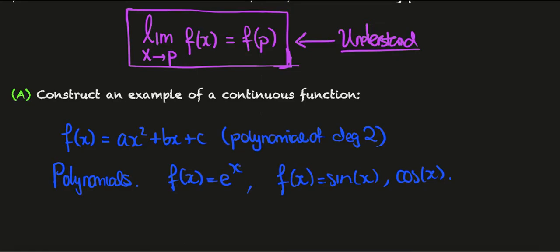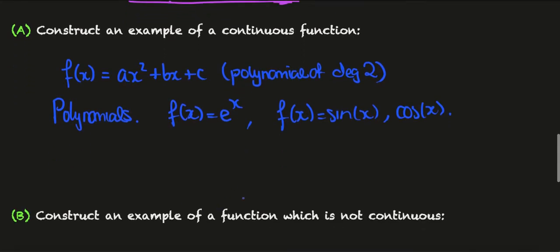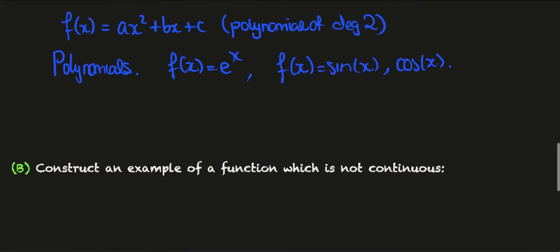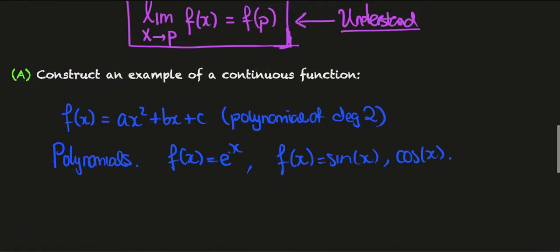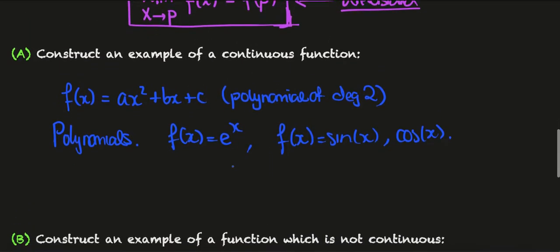That's the easy part. Now construct an example of a function which is not continuous. We need to construct a function for which this limit doesn't coincide with the function value.